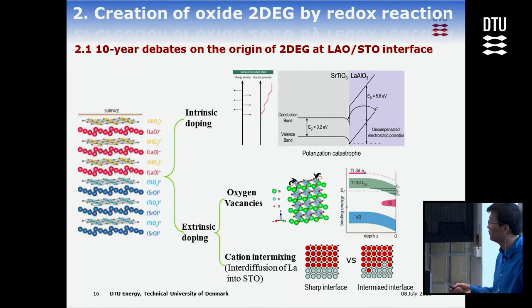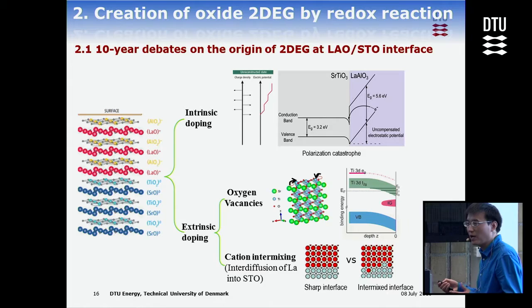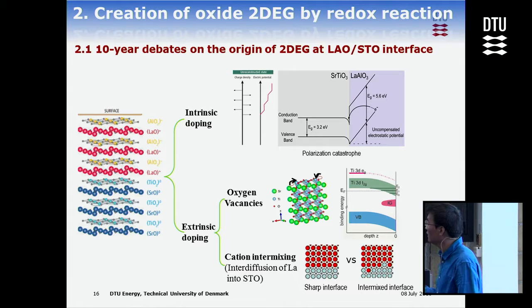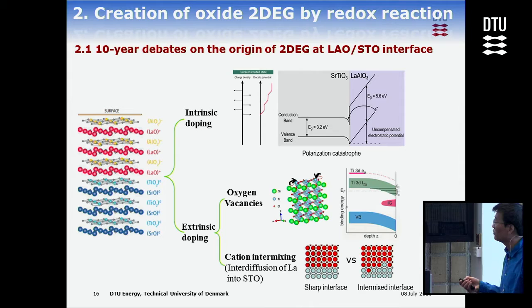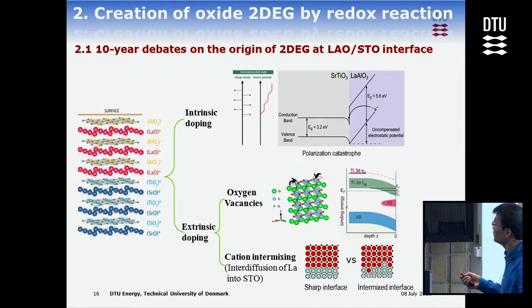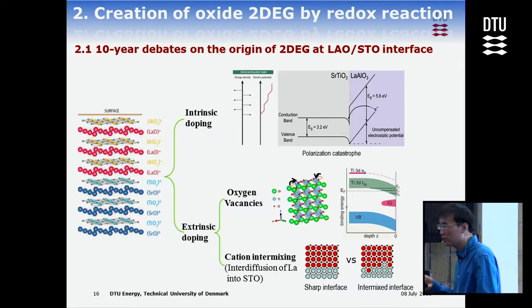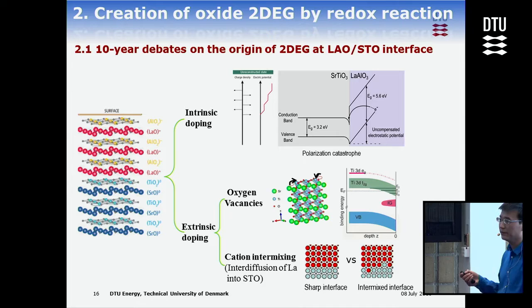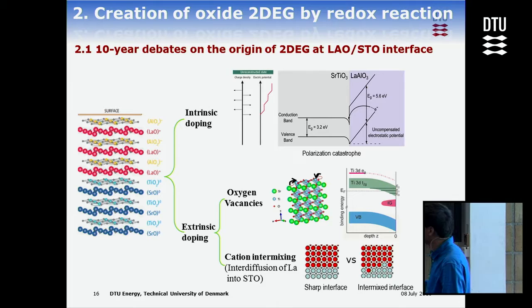Going back to the conducting LAO/STO interface, there has been ten years of discussion about why the interface is conducting. The original explanation involves intrinsic doping: lanthanum aluminate is a polar material, and when you put a polar material on a non-polar one, a potential builds up at the interface. When this potential lifts the valence band of LAO above the conduction band of STO, electrons transfer — but this requires a voltage as high as 3.2 eV, equivalent to about 32,000 degrees.